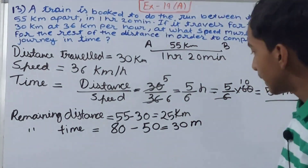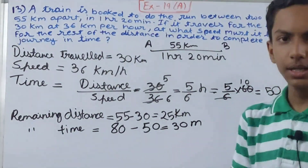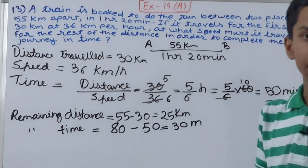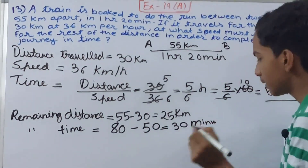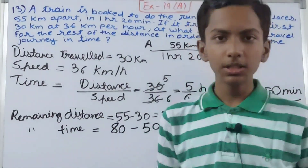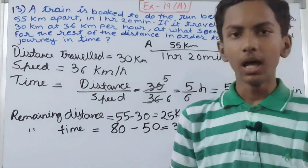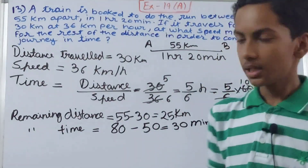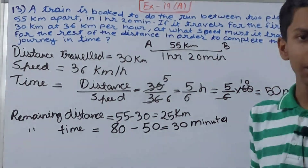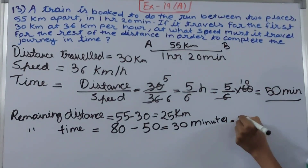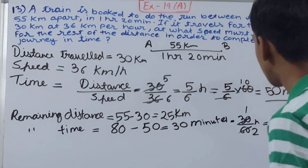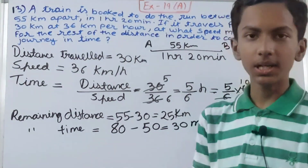Now we convert the remaining 30 minutes into hours, because distance is in kilometers and speed must be in kilometers per hour. So 30 minutes divided by 60 gives us 1/2 hour, or half an hour. So half an hour of time is left and the remaining distance is 25 kilometers.